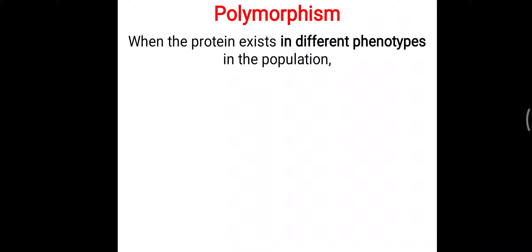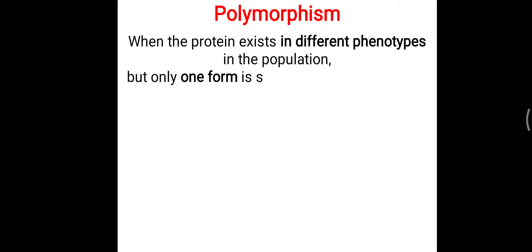Polymorphism is when a protein exists in different phenotypes — different physical forms — in a population. But the interesting thing is that in one particular person, a particular protein is found in only one form. So when we look at different persons, they may have different phenotypical forms of that protein.